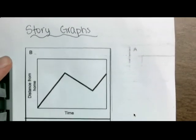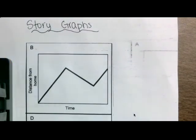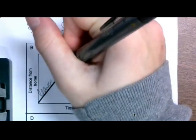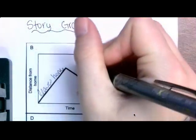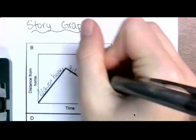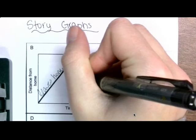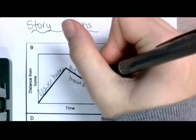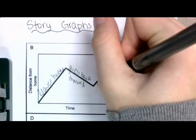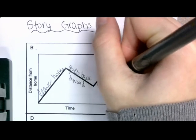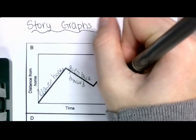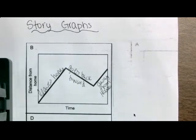Now we're going to flip it over and look at B. What do you think B is? B is he leaves home, goes back towards his house, then away from house again. He leaves his house.